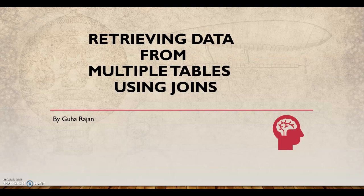Welcome back. Let's now look at retrieving data from multiple tables using the JOIN condition. The SQL queries we've seen so far have been from a single table — we looked at different functions, restricted using WHERE clause, and used GROUP BY for aggregate functions. These are much simpler, but generally the data will be residing in multiple tables, not just in a single table. You just can't have one single table with thousands of columns.